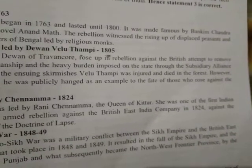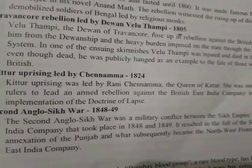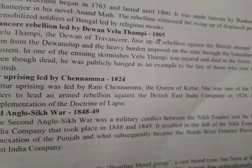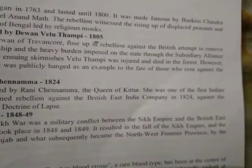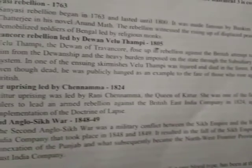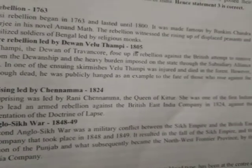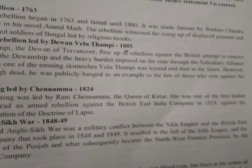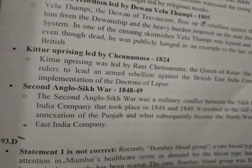The British attempted to remove Velu Thampi from the Diwan ship and imposed heavy burdens through the Subsidiary Alliance system. Velu Thampi was injured and died in the forest. Even though dead, he was publicly hanged as an example to threaten those who were against the British.